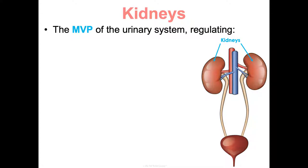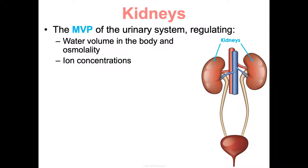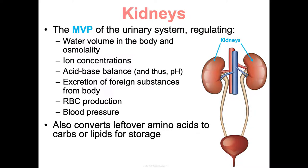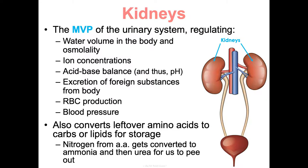Here's why the kidneys are the MVP: they regulate water volume and osmolality, which is solute concentration; ion concentrations; acid-base balance and pH; excretion of foreign substances; red blood cell production; and blood pressure. Your kidneys also convert leftover amino acids to carbs or lipids for storage, and the remaining nitrogen gets converted to ammonia and then urea, which we eventually excrete in urine.